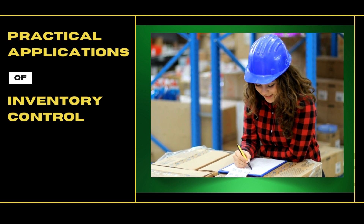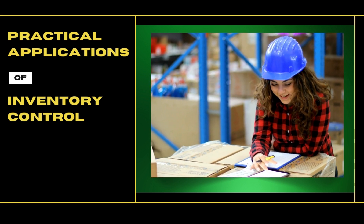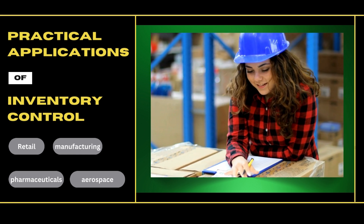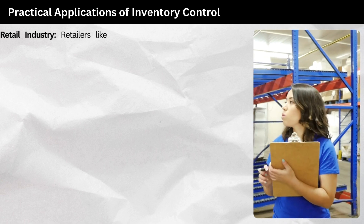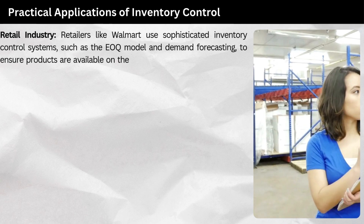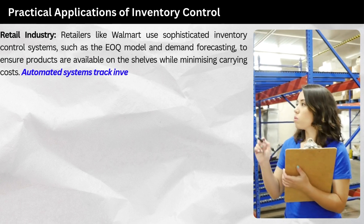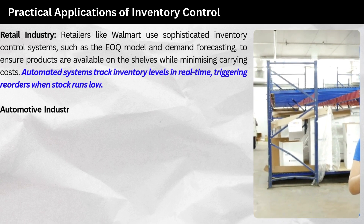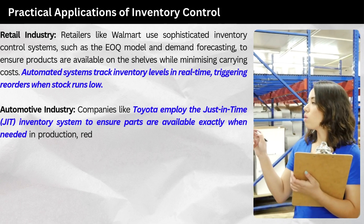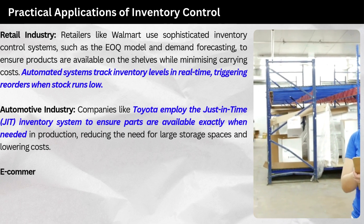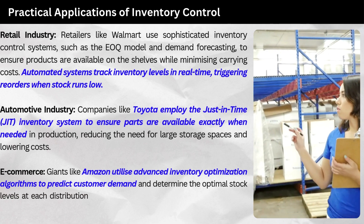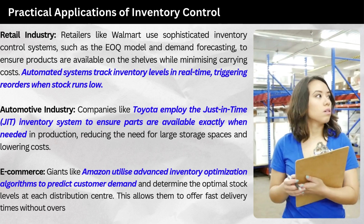Inventory control techniques are applied in various industries, including retail, manufacturing, pharmaceuticals, and aerospace. In the retail industry, retailers like Walmart use sophisticated inventory control systems, such as the EOQ model and demand forecasting, to ensure products are available on shelves while minimizing carrying costs — automated systems track inventory levels in real-time, triggering reorders when stock runs low. In the automotive industry, companies like Toyota employ the JIT inventory system to ensure parts are available exactly when needed in production, reducing storage needs and lowering costs. In e-commerce, giants like Amazon utilize advanced inventory optimization algorithms to predict customer demand and determine optimal stock levels at each distribution center, allowing fast delivery without overstocking.